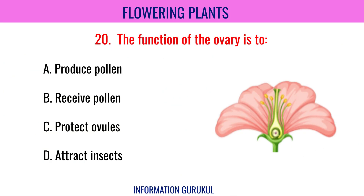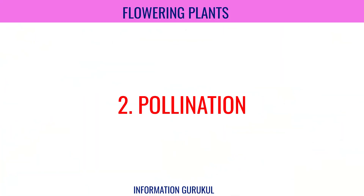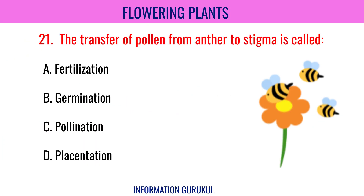The function of the ovary is to protect ovules. The transfer of pollen from anther to stigma is called Pollination.